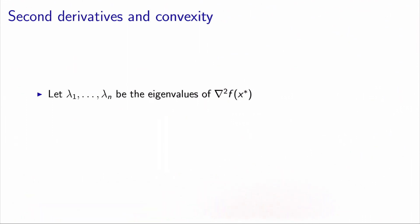Remember that the second derivatives of a function give us information about the convexity of the function. So take the second derivative matrix at x star, the Hessian, and consider its eigenvalues. We call them lambda 1 to lambda n.